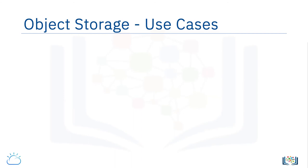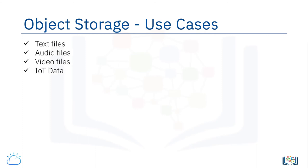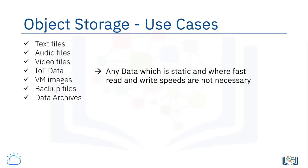Object storage has a very flat storage structure, which we'll explain in the next lesson. The data can be anything from text files to audio and video files, from IoT data to virtual machine images, from backup files to data archives. Pretty much any data which is static and where fast read and write speeds are not necessary would make a good fit for object storage.